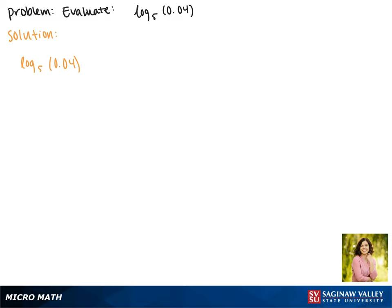This is 4 hundredths, which as a fraction is 4 over 100. This can be simplified to 1 over 25.